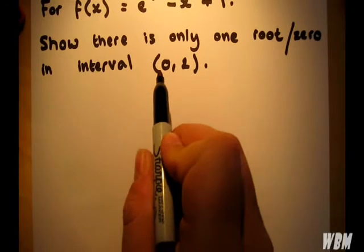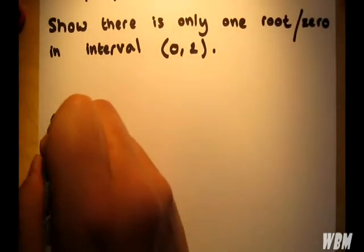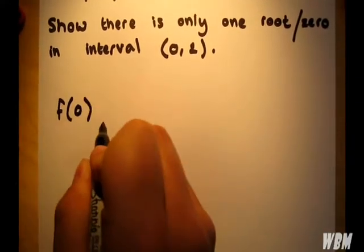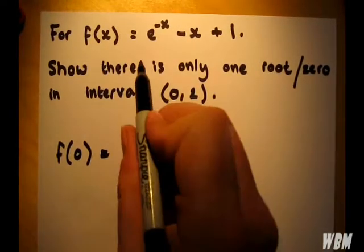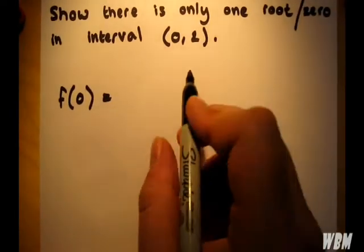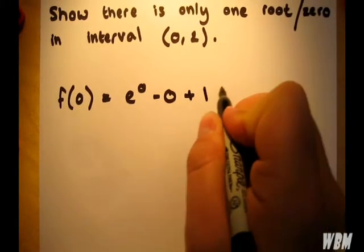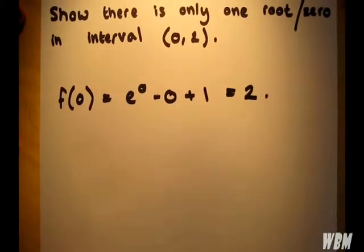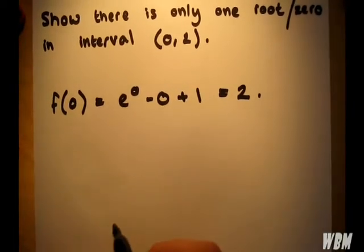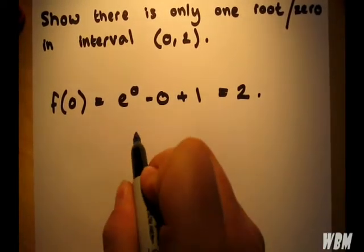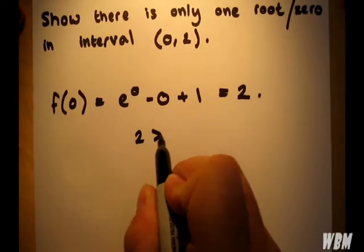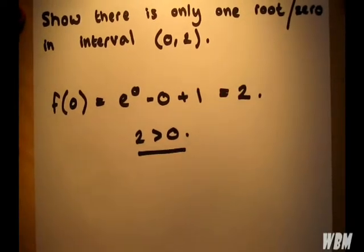So the first step is to put in the 0 and see what we get given out. We have f of 0 equal to e to the 0 minus 0 plus 1 equals 2. Now, of course, we have that 2 is positive and 2 is greater than 0.